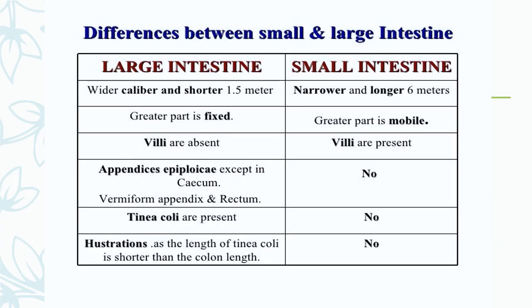The differences between the large and small intestines are summarized in a table. The large intestine has a wider caliber and is shorter; the small intestine is narrower and relatively longer. The large intestine is mostly fixed; the greater part of the small intestine is mobile. The large intestine has no villi, whereas villi are present in the mucous membrane of the small intestine. Appendices epiploici, teniae coli, and haustra are present in the large intestine but absent in the small intestine.